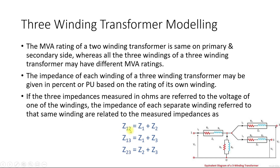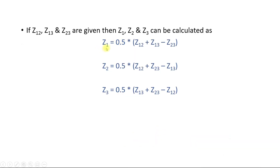Z12 can also be known as Zhl (HV to LV), Z13 as HV to tertiary voltage, and Z23 as LV to tertiary voltage. If you are given Z12, Z13, and Z23, you can convert them back to Z1, Z2, and Z3 using: Z1 = (Z12 + Z13 − Z23) / 2. This works because Z1 appears in both Z12 and Z13 (twice total), while Z23 does not include Z1, so subtracting Z23 and dividing by 2 isolates Z1. This way you can calculate all individual transformer impedances.